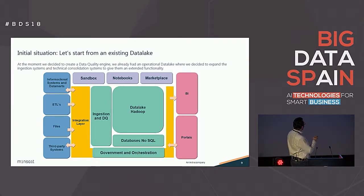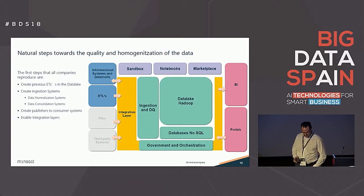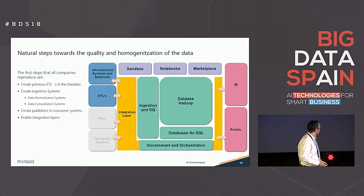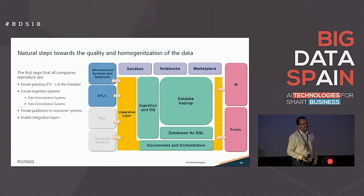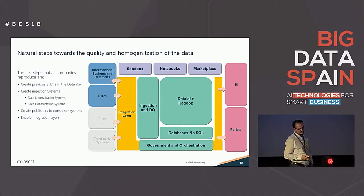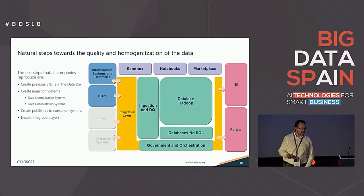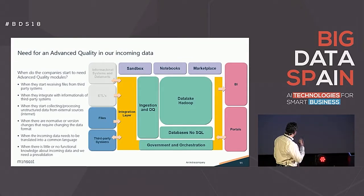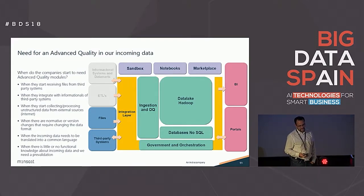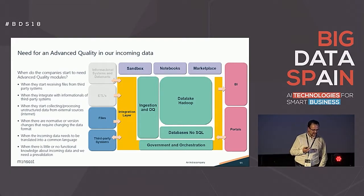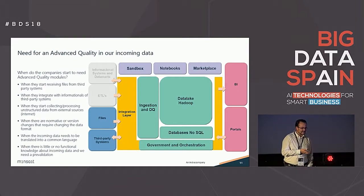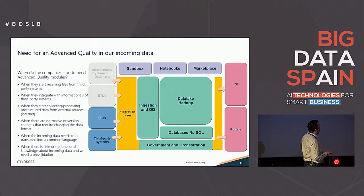This is where we started. Most companies at this point were gathering information from informational systems and ETLs — that was the beginning. We all started here in Spain, in the banks, in public administrations. At that point, we sometimes had to create normalization and consolidation systems, but in most cases the information we gathered was correct from the beginning and easy to ingest into the data lake. The problem began when we started receiving files — third-party information, information from the internet, non-structured data, or data we didn't have time to functionally analyze before ingestion, so we didn't know what we were receiving.